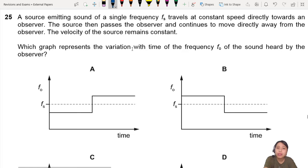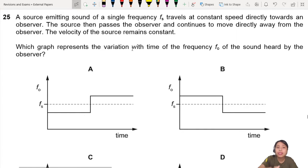A source emitting a sound of a single frequency travel at a constant speed, directly towards an observer. Then the source will pass the observer and then move directly away from the observer. The velocity is constant. Which graph shows the frequency graph of the sound heard by the observer?